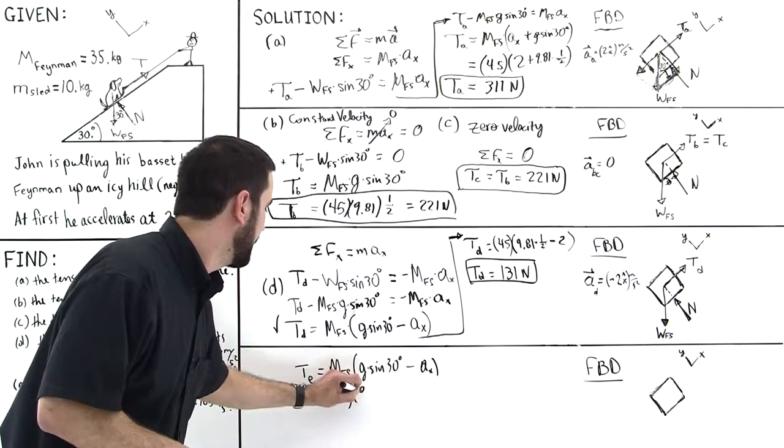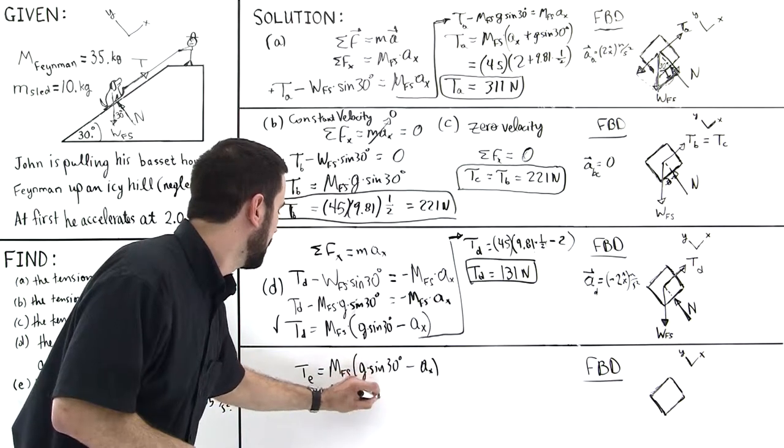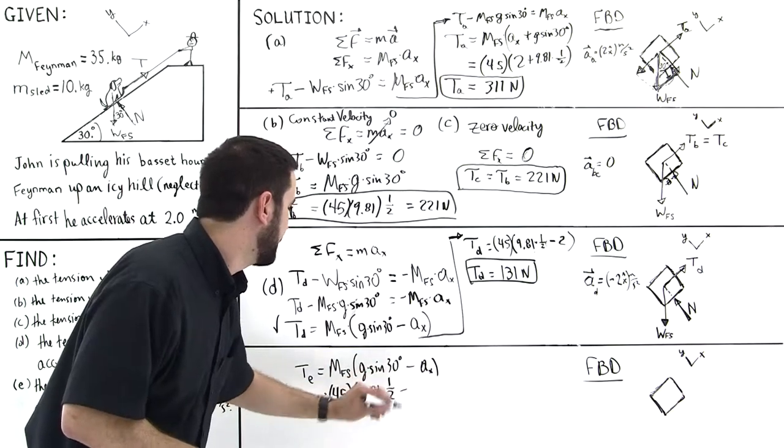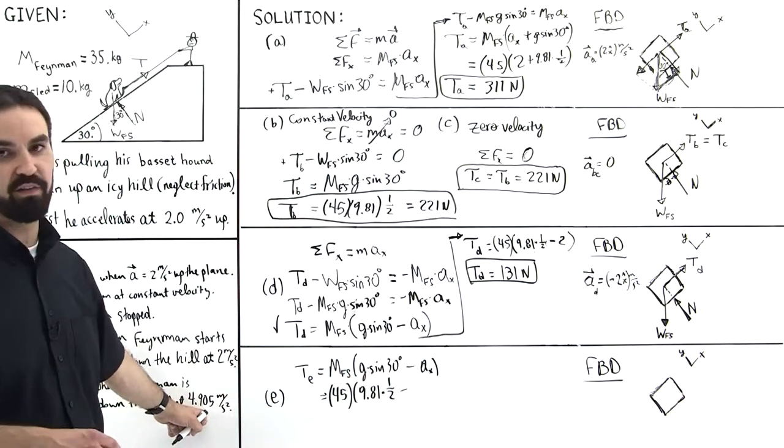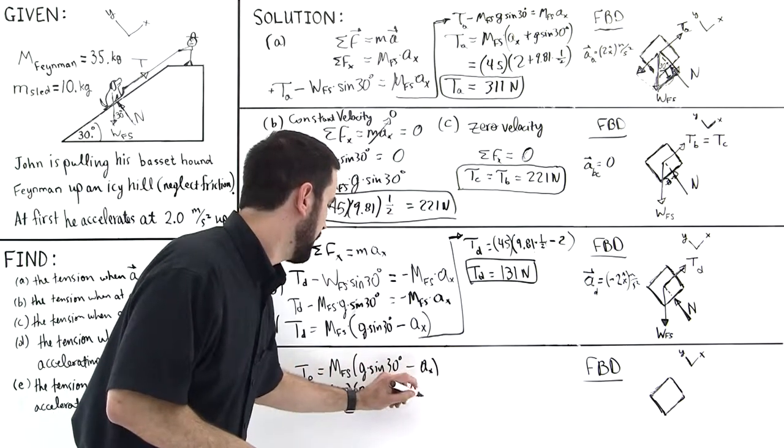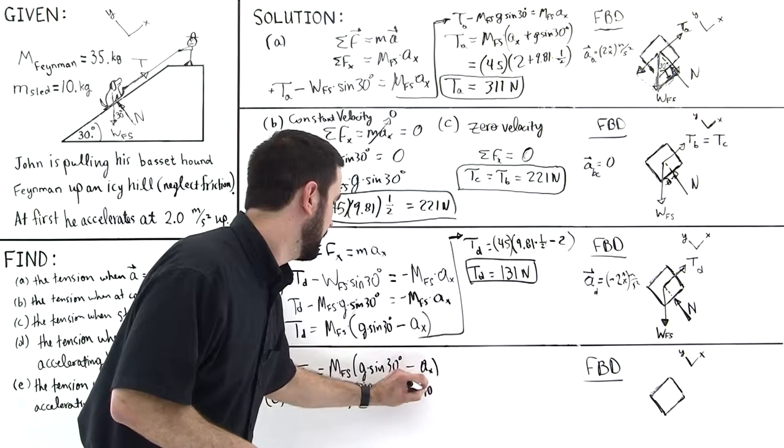And we have 9.81 times 1.5 minus 4.905 is the acceleration in the final scenario. 4.905.